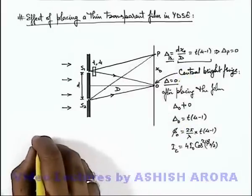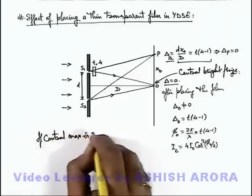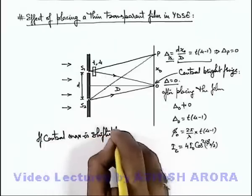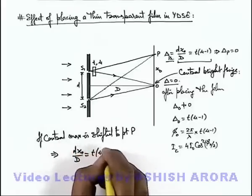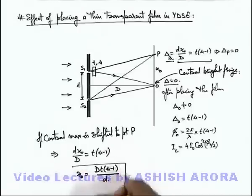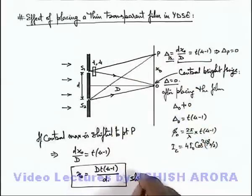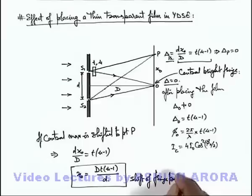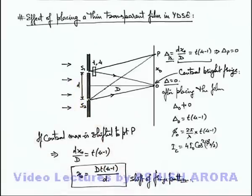If the central maxima is shifted to point P, this implies dx₀/D = t(μ − 1), so the shift of central maxima is given as Dt(μ − 1)/d. This is the distance by which not only the central maxima but the whole fringe pattern will shift, due to the introduction of a thin film in the path of light waves coming from one of the slits.